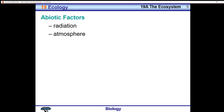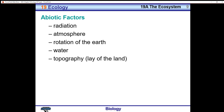In addition to radiation, atmosphere, rotation of the Earth, and water, the topography of the land will also affect an ecosystem — that is, the lay of the land. Is it flat, desert-like, mountainous, or a high plateau? Things like this affect the biosphere. The soil that makes up an area has different mineral contents; some soils are very rich and allow plants to grow readily, while others are very rocky and minerals are hard to obtain by plants.